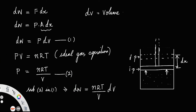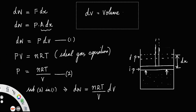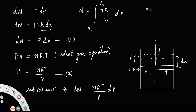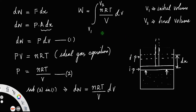In order to get the total work, total work will be the integral of this: nRT divided by V, dV. Let us call the initial volume as V1 and the final volume as V2. So work done is equal to the integral from V1 to V2 of nRT by V, dV.